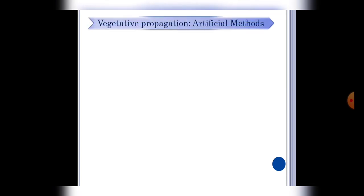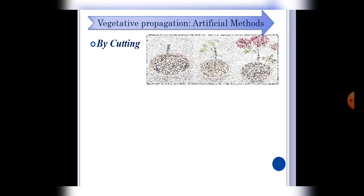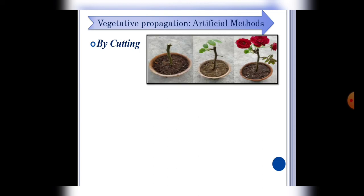Now we will talk about artificial method of vegetative propagation. And first is by cutting. In this method, a stem which contains bud and leaf is cut and planted into soil. And the best example is rose plant. From this type of method, we can grow more and more plants in less time which are exact copies of their parent plant.